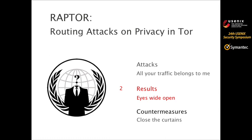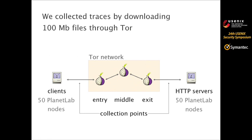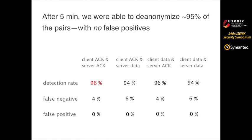We will now demonstrate the attacks by performing them in real-world experiments. First, asymmetric traffic analysis is highly efficient. We set up 50 Tor clients and 50 HTTP web servers on PlanetLab machines. Each Tor client downloads 100 megabytes of files at the same time through Tor from one of the 50 servers. We collected both directions of traffic at both ends. After five minutes, we were able to de-anonymize about 95% of the pairs with no false positives. Since seeing either direction at both ends is sufficient with asymmetric traffic analysis, there are four ways to correlate the traffic, as shown here.